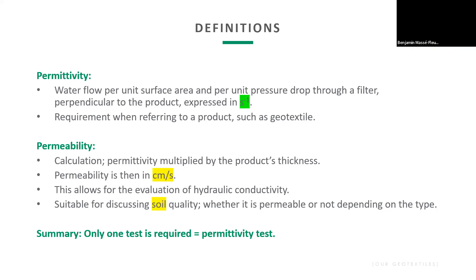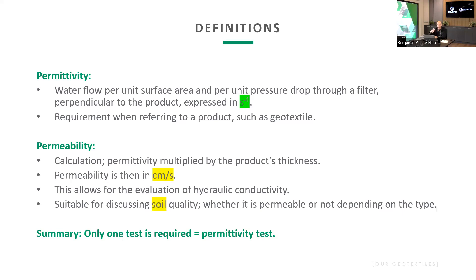Permeability is easier to understand — it's permittivity multiplied by the product thickness, so it reflects how easily water passes through. It's more of a soil-science notion, but for geotextiles the correct test is permittivity, which accounts for the geotextile's thickness and is expressed in units of inverse seconds (s⁻¹).